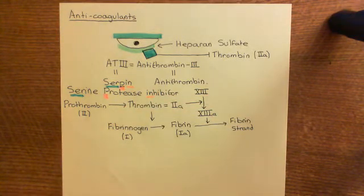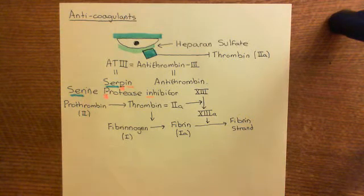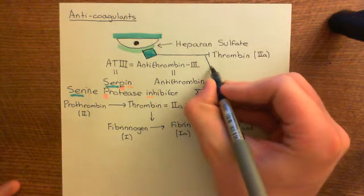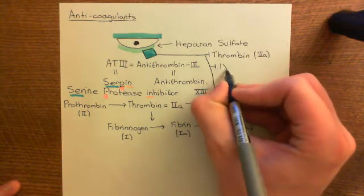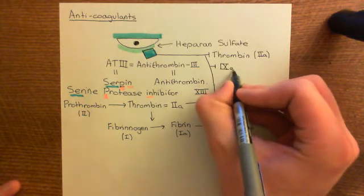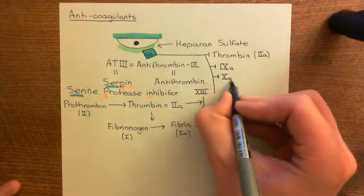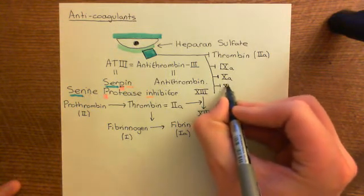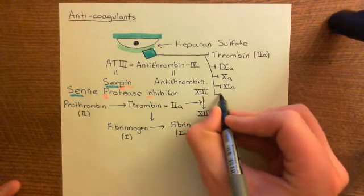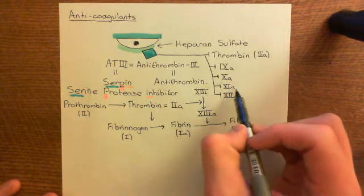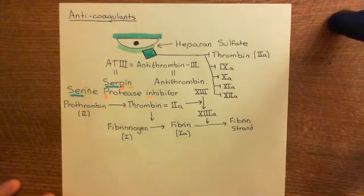Thrombin is the first target we've seen for antithrombin-III, which has been activated — and thrombin is therefore a serine protease. All of the enzymes which antithrombin-III inhibits are serine proteases. It also inhibits factor 9a, 10a, 11a, and 12a. So it inhibits quite a few of the coagulation factors once they're in the active form.